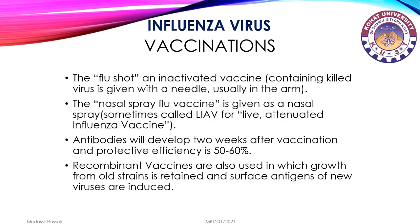Vaccination: the flu shot is an inactivated vaccine containing killed virus, given with a needle usually in the arm. The nasal spray flu vaccine, sometimes called live attenuated vaccine, is given as a nasal spray. Antibodies develop two weeks after vaccination, with a protective efficiency of 50 to 60%. Recombinant vaccines are also used, in which the growth framework of old strains is retained and surface antigens of the new virus are induced.